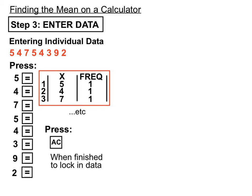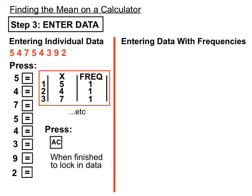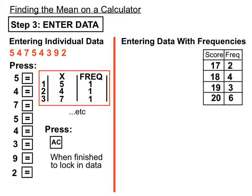We'll see in the next slide how we access the statistical measures from that bunch of numbers. So that's how we enter individual data if we're trying to find the mean. Now let's look at if we had data that had frequencies along with it.